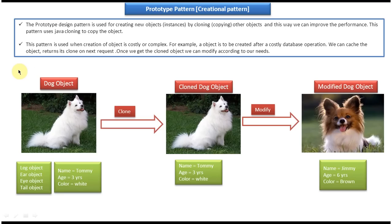The first time a client requests the dog object, we construct it and put it in the cache. The next time a client requests the dog object, we get it from the cache, clone it, and return the copy to the client. Once the client gets the copy, they can modify its properties according to their needs.